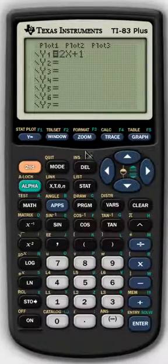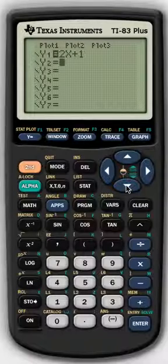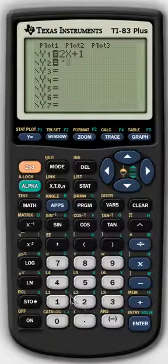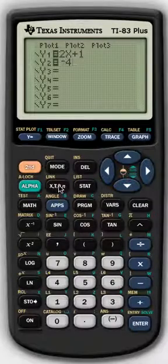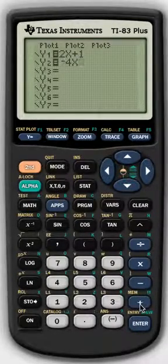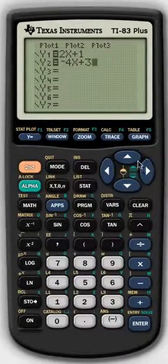Let's go back to y equals, and this time let's do a line with a negative slope. So let's say we do negative 4, use that x again, that button, and we'll do plus 3, and we'll hit Graph.